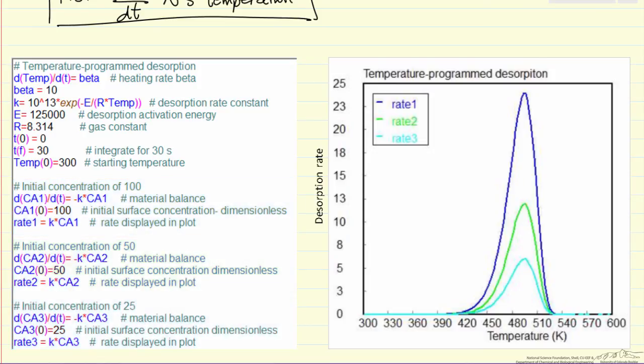So in this case I have used values of 100, 50, and 25. And the important thing to notice is the curves look identical except scaled by their initial concentration. In other words, if I take this curve and multiply it by 2, I get this curve. If I take this curve and multiply it by 4, again I get this curve.